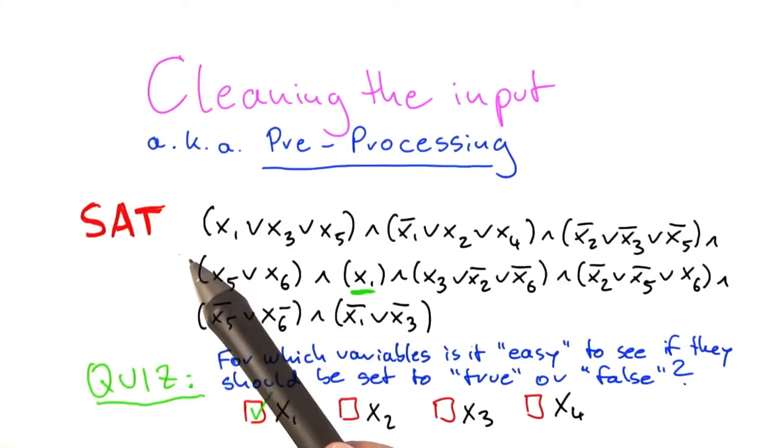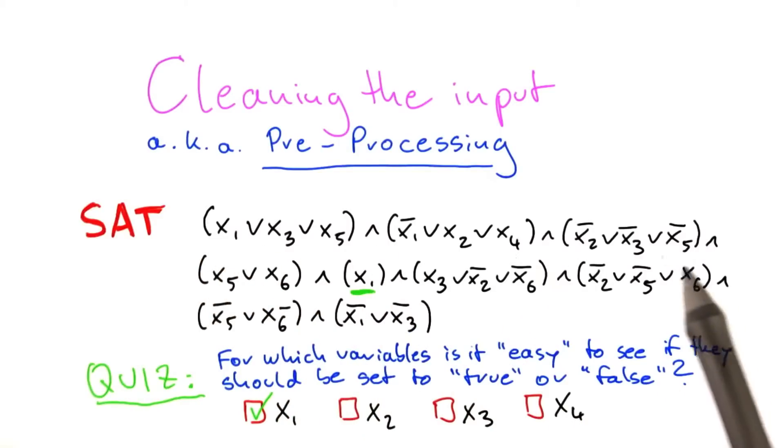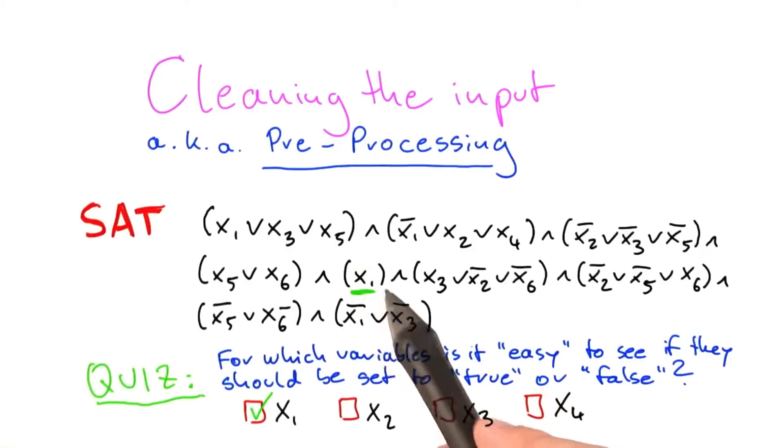And this can be done in polynomial time. It's rather easy because you just go through this whole Boolean formula here, or an algorithm could do it. Then it finds a clause with just one variable. And it knows if you have a clause with just one variable, then it's immediately clear how you have to set this. So for example, if we had not x1 here, we would also know that we would have to set it to false.